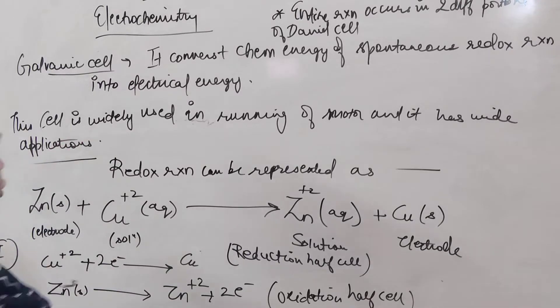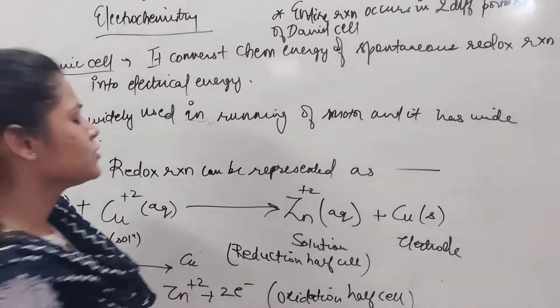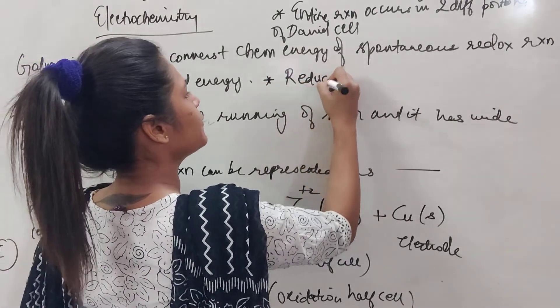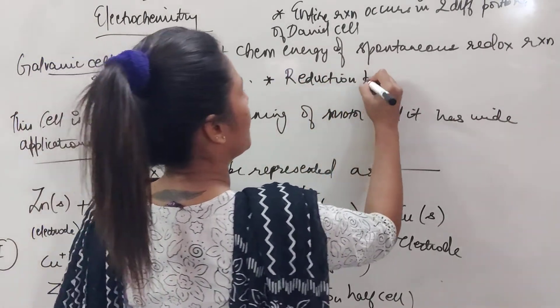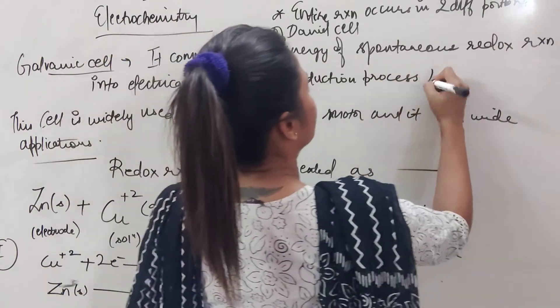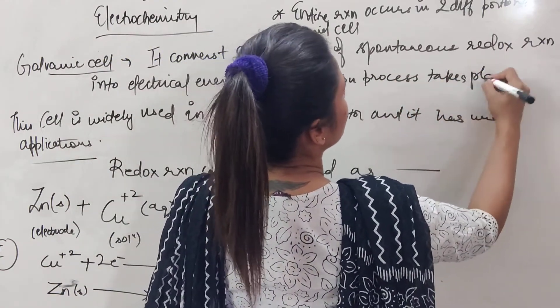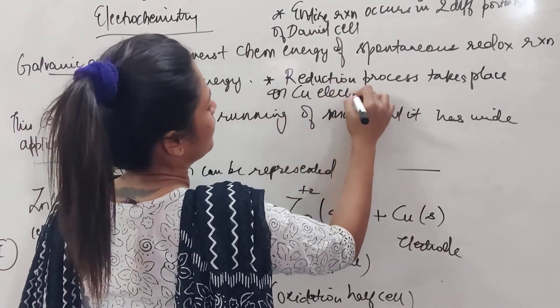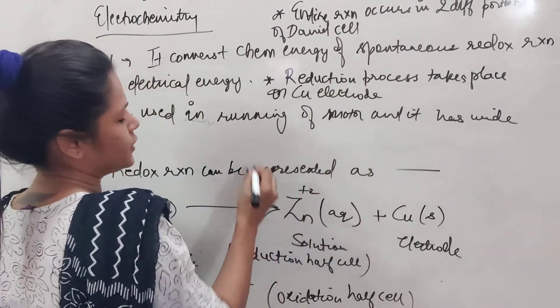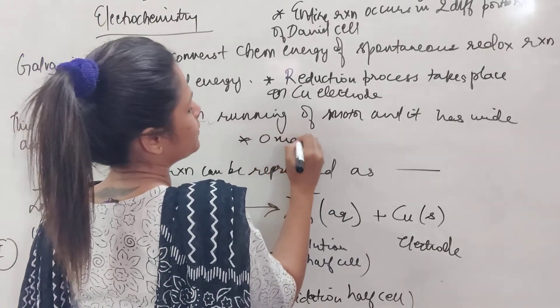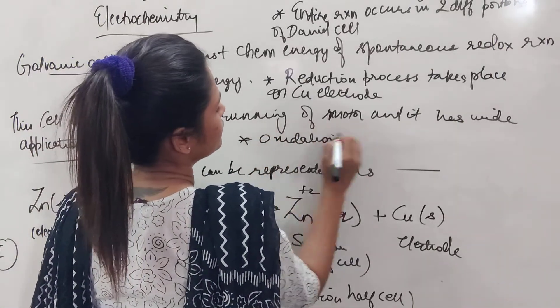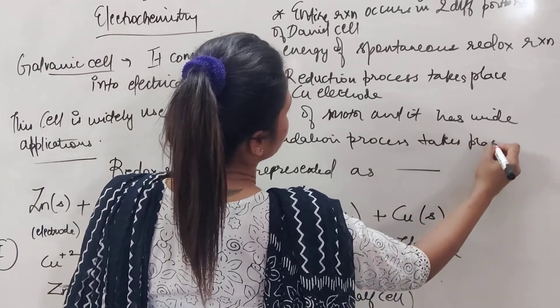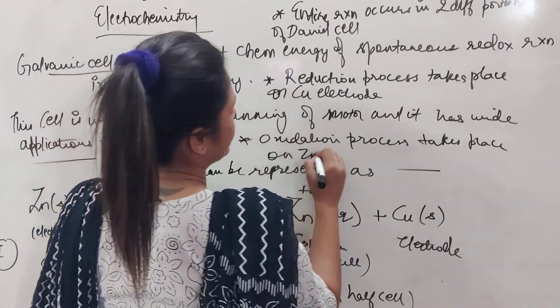So at one side this reduction will be going on and at other side the oxidation will be going on. Reduction process takes place on copper electrode. Copper electrode, reduction and oxidation process takes place on zinc electrode.